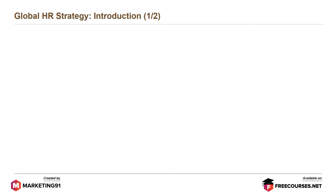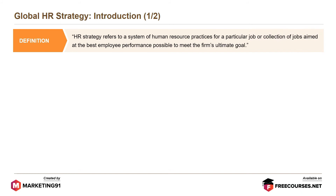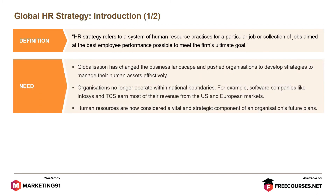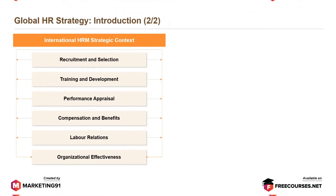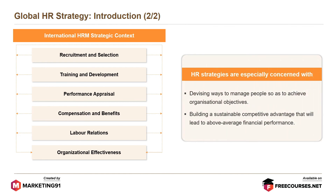The last module in this video is on global HR strategy. By definition, HR strategy refers to a system of human resource practices for a particular job or collection of jobs, aimed at the best employee performance possible to meet the firm's ultimate goal. Globalization has changed the business landscape and pushed organizations to develop strategies to manage their human assets effectively. Organizations no longer operate within national boundaries — for example, software companies like Infosys and TCS earn most of their revenue from the US and European markets. Human resources are now considered a vital and strategic component of an organization's future plans. HR strategies are especially concerned with devising ways to manage people to achieve organizational objectives and build a sustainable competitive advantage that will lead to above average financial performance.